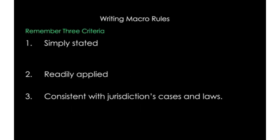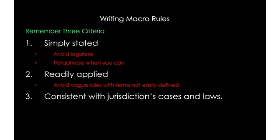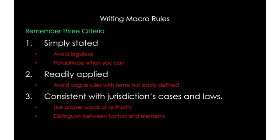Next, let's talk about how to write macro rules. There are three criteria to keep in mind. First, you want your rule to be simply stated — avoid any legalese and stick with plain English, paraphrasing when you can. This builds your credibility with the reader; quoting all the time actually detracts rather than adds to your credibility. Second, you want it to be readily applied, meaning avoid vague rules with terms not easily defined. Third, it should be consistent with the jurisdictions, cases, and laws, which means using proper words of authority and distinguishing between factors and elements.